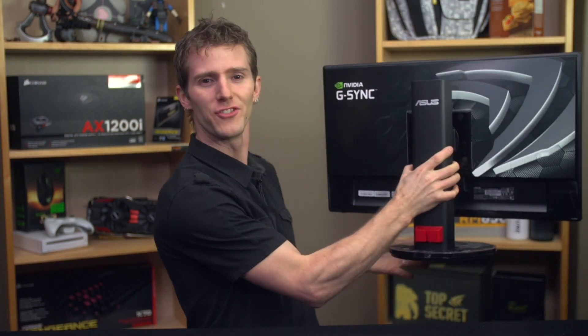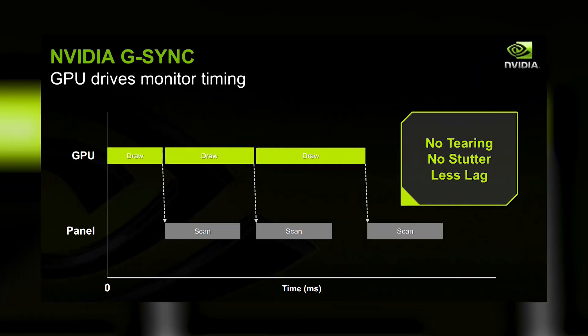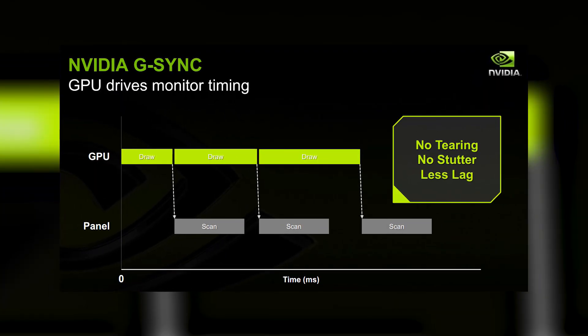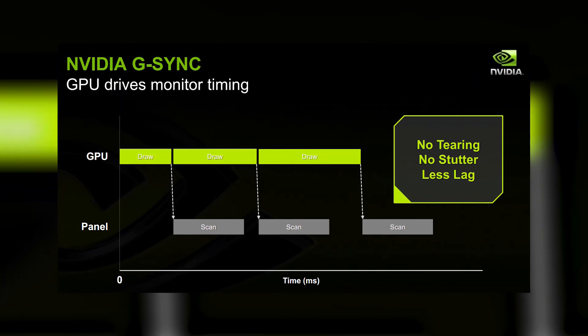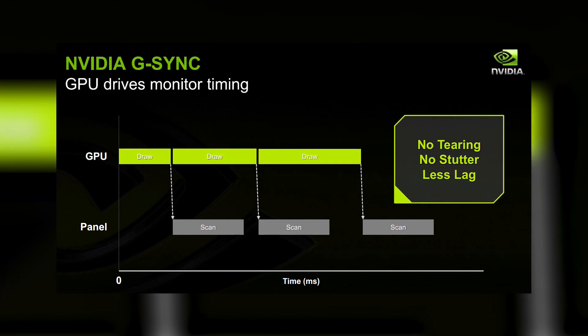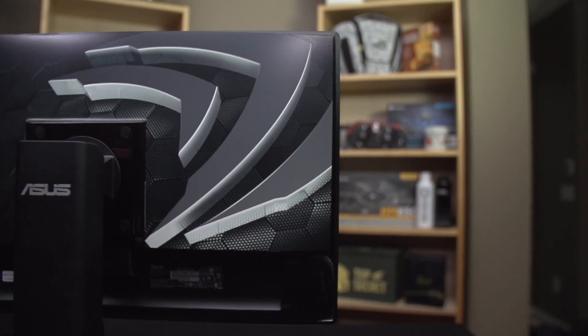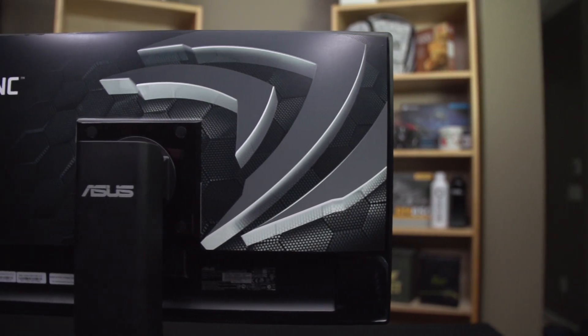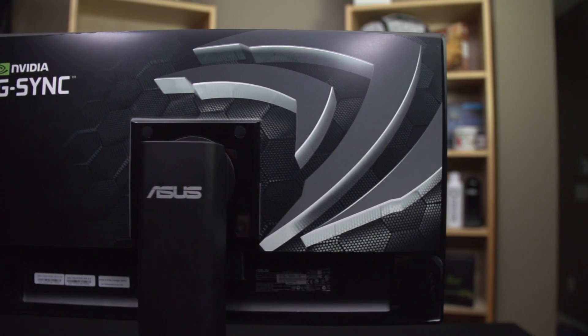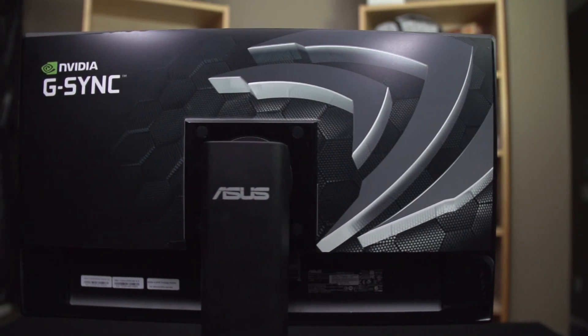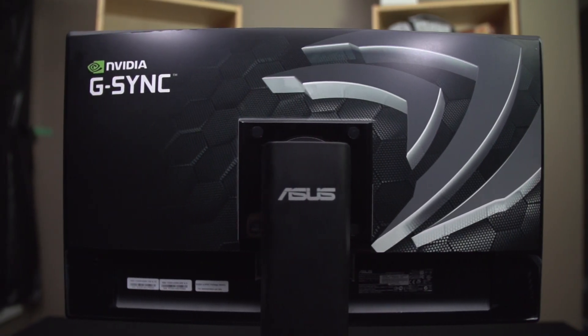Now on to this guy — G-SYNC. It allows your monitor to wait for your graphics card to be ready to deliver a new frame and update itself at that exact moment. This eliminates the lag and stuttering associated with V-SYNC on and low frame rates, and it eliminates the tearing associated with V-SYNC off and high frame rates, because we never need to output multiple frames to the screen during a single refresh. Alright, so it sounds magical — what do I need?